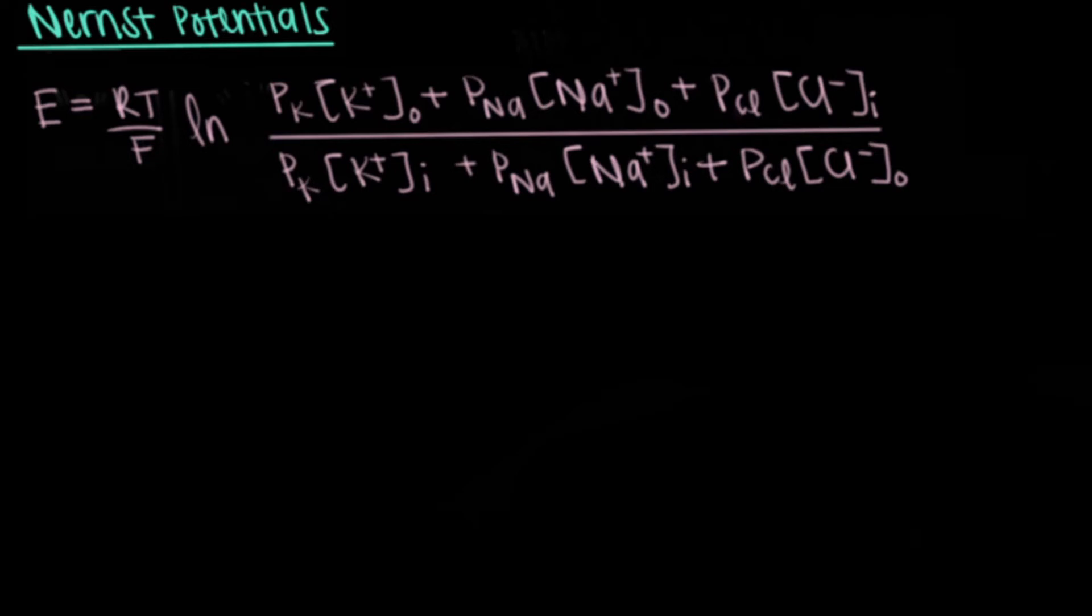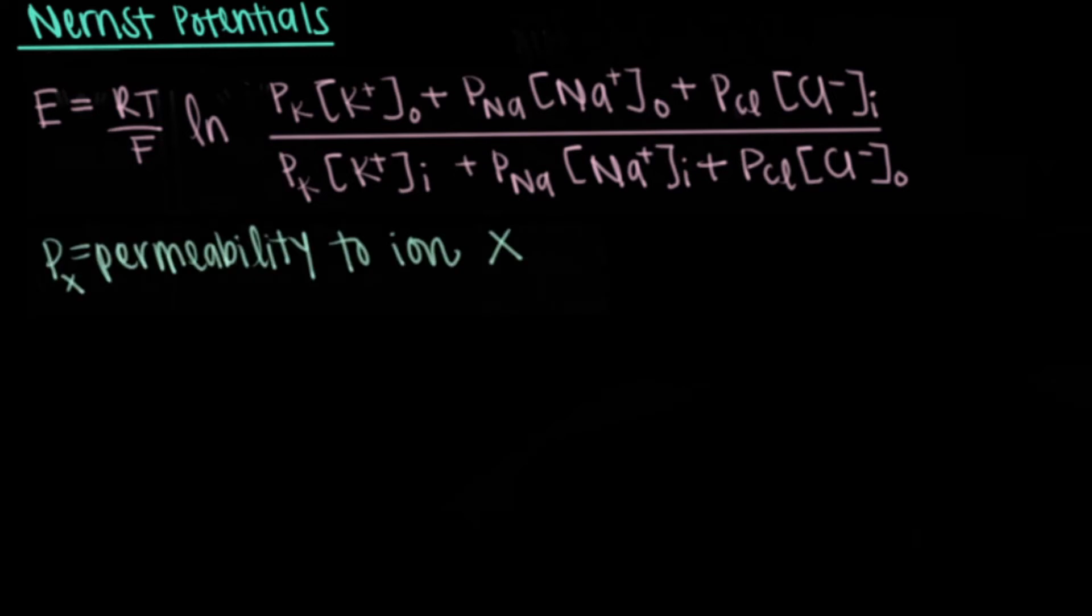P here stands for the permeability of the membrane to each ion. Note here that chlorine has a different concentration gradient than Na plus and K plus. This is due to the fact that the valence number of chlorine is negative one. This equation accounts for this negative one value by flipping the concentration ratio to inside divided by outside.